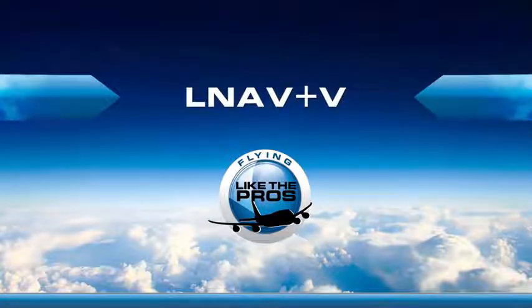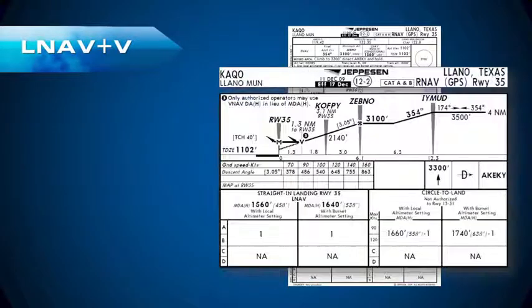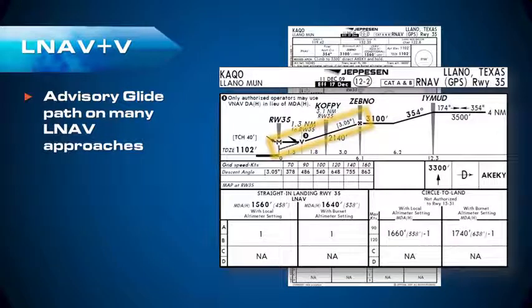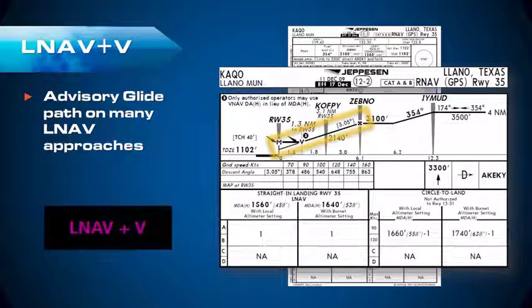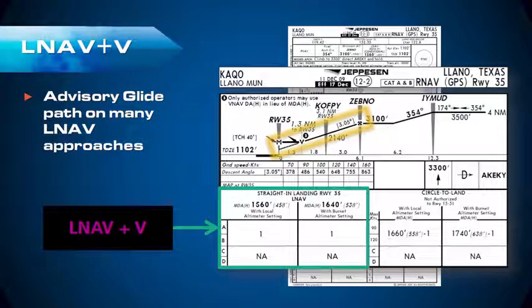Let's look at LNAV+V, which Peter and I agree is a confusing feature of the G1000 that gets pilots into serious trouble. Looking at the Llano, Texas RNAV Runway 35 approach, you can see an advisory glide path, which is often published on non-precision approaches to give you a stable descent above the step-down fixes to the visual descent point. The G1000 has these advisory glide paths in its database and will provide vertical guidance whenever it enunciates LNAV+V. Just remember, you are still using the LNAV non-precision minimums even though you are getting vertical guidance.